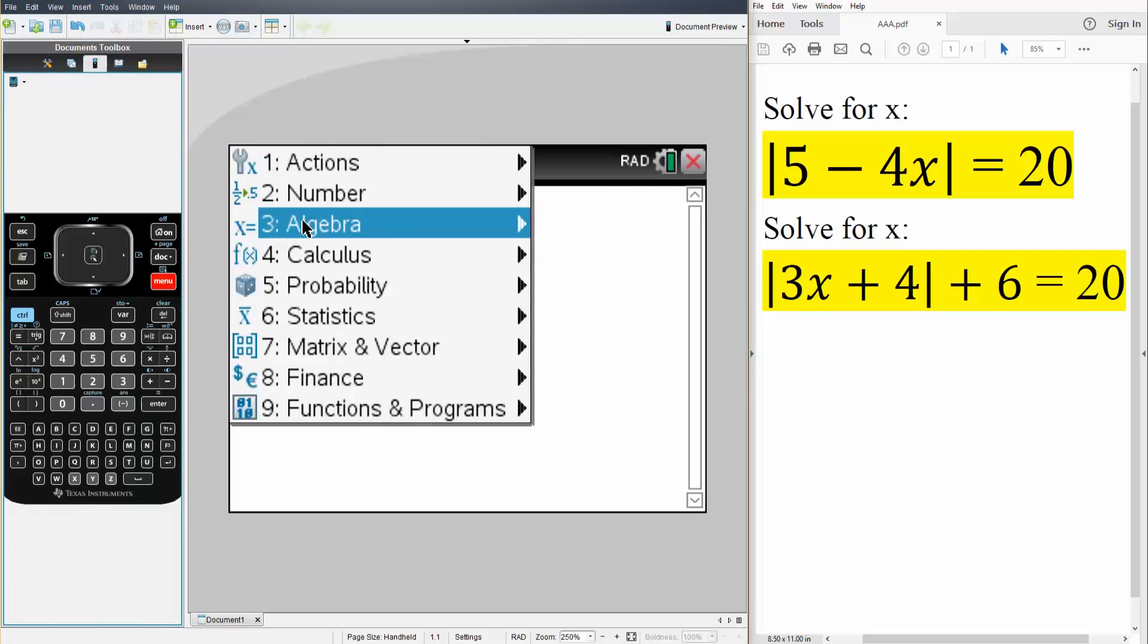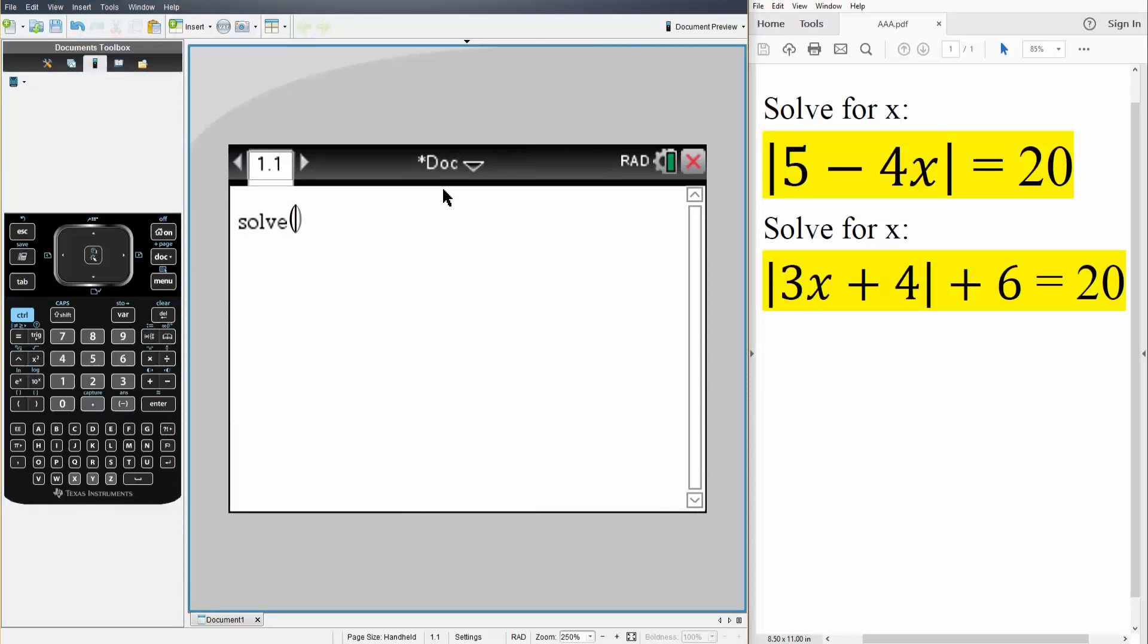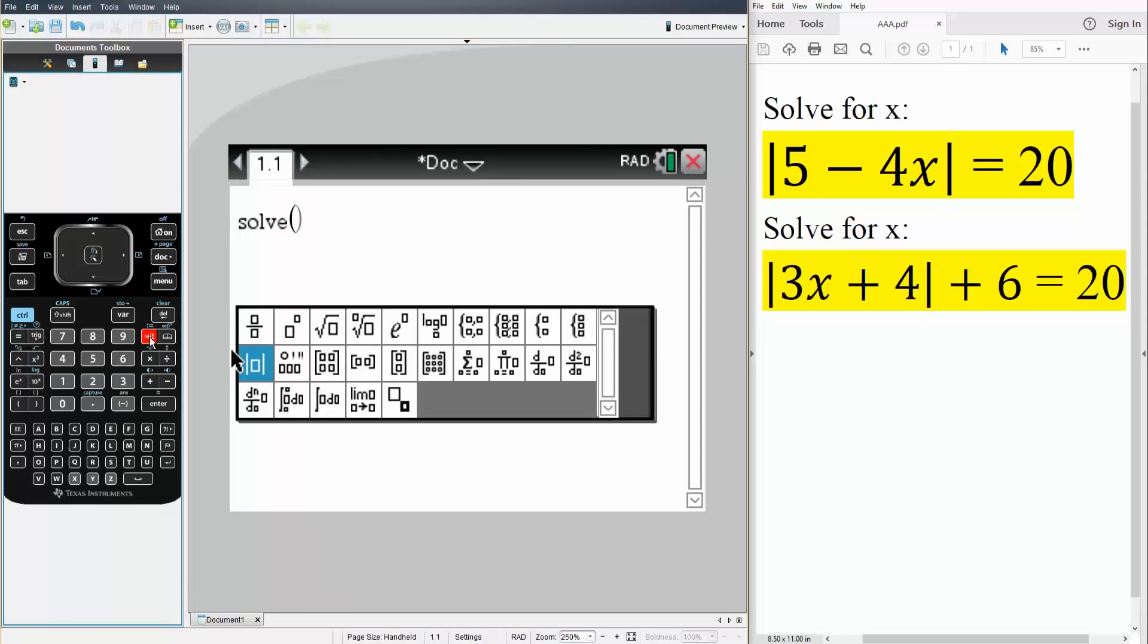So we'll first hit menu, we'll hit algebra, we'll hit solve and we want to get the absolute value template. So if we hit this icon right here we go to this absolute value sign right here.